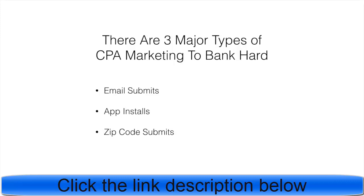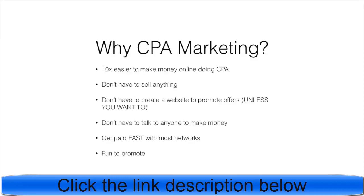Email submits convert super easy. App installs are fun to do. Zip code submits convert way easier than email submits. Why CPA marketing? It's 10x easier than other ways to make money online. You don't have to sell anything, create a website, or talk to anyone. You get paid fast with most networks and it's fun to promote.